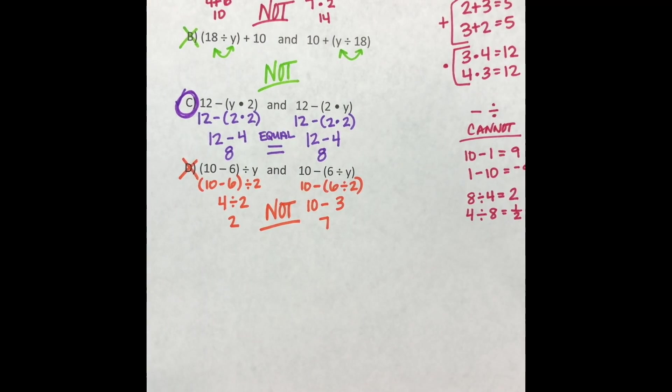So the only one that makes sense and is equal or equivalent is letter choice C, and that is how we solve for expressions that are equivalent when we have variables. The magic word for this video is cloud.